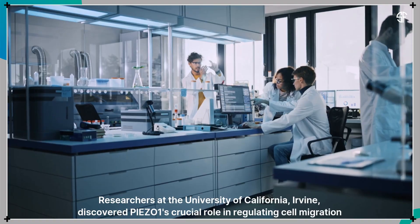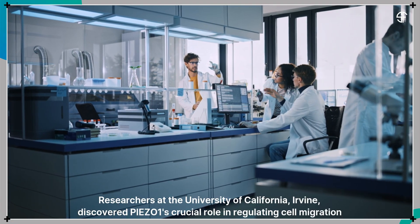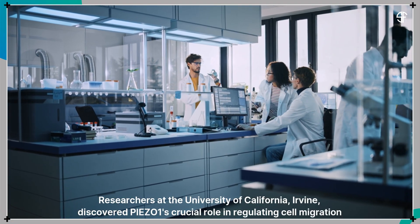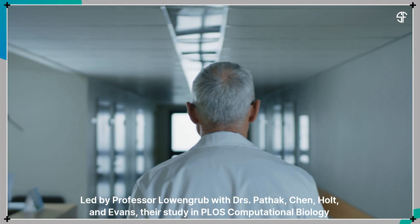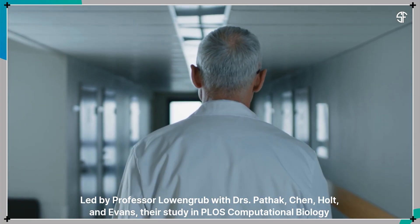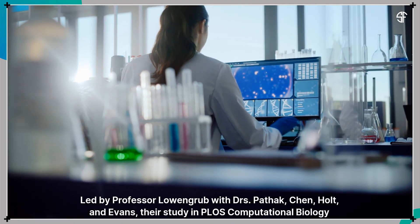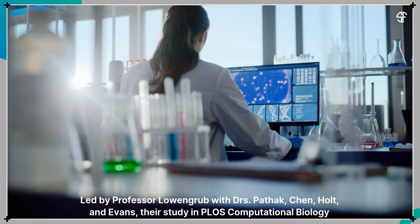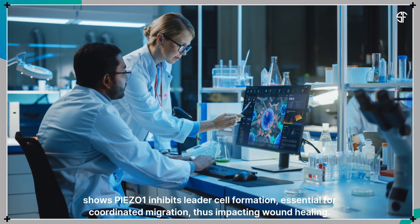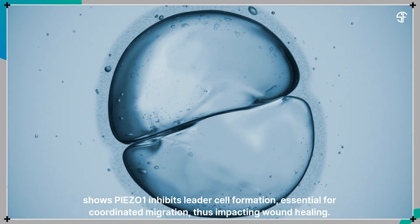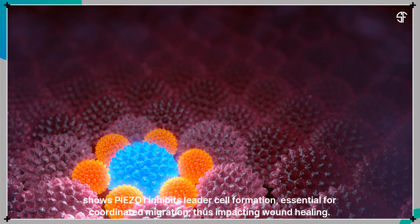Researchers at the University of California, Irvine discovered P-AZO-1's crucial role in regulating cell migration during wound healing. Led by Professor Lohengrub with Drs. Pathak, Chen, Holt, and Evans, their study published in PLOS Computational Biology shows that P-AZO-1 inhibits leader cell formation, which is essential for coordinated migration, thus impacting wound healing.